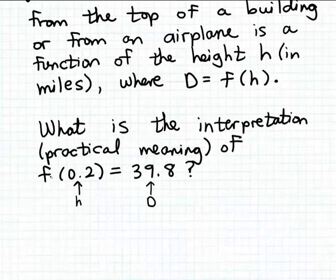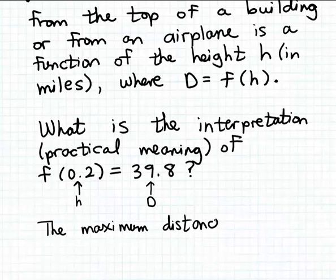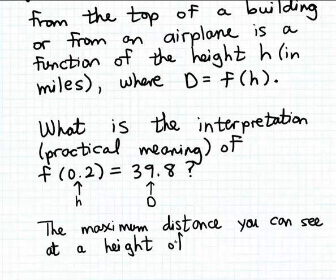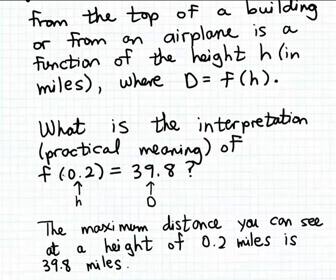This tells us that the maximum distance you can see, because that's the output quantity, at a height of 0.2 miles—remember our input quantity is measured in miles—is going to be 39.8, and again our output quantity is measured in miles. So the equation f of 0.2 equals 39.8 can be translated to this sentence: the maximum distance that you can see at a height of 0.2 miles is 39.8 miles.